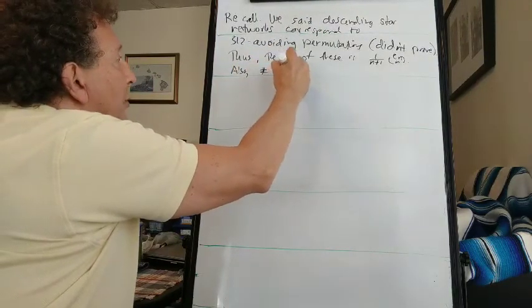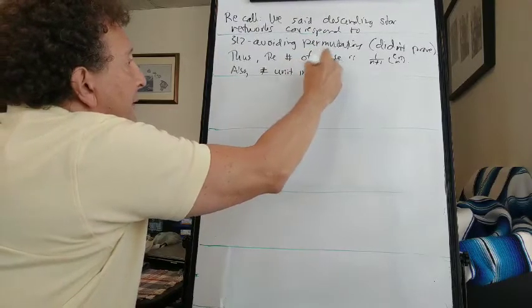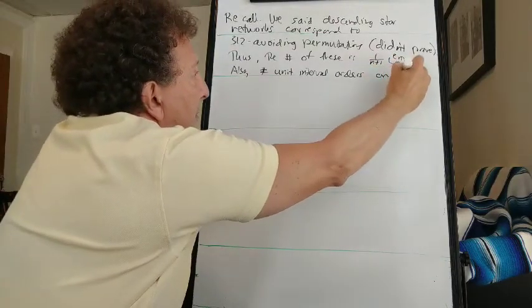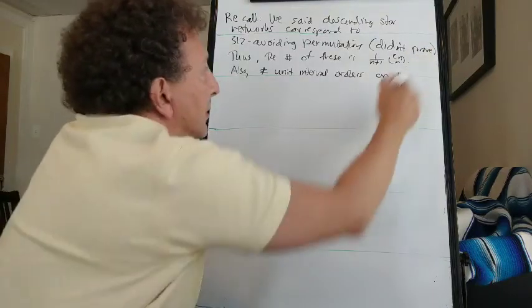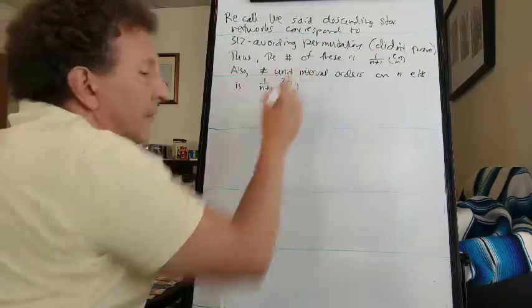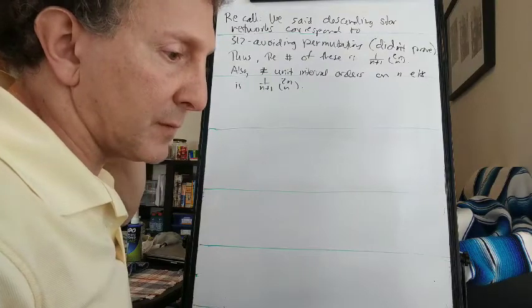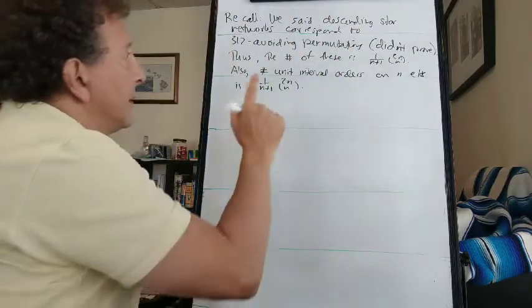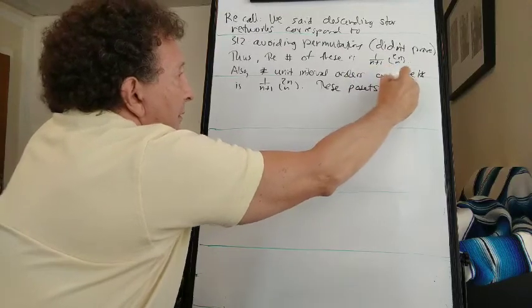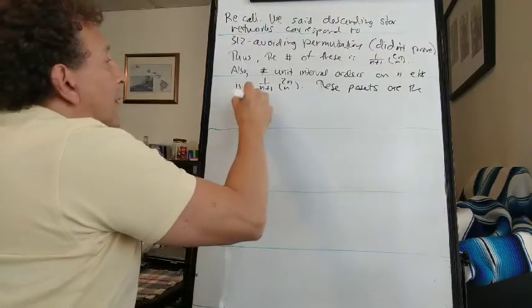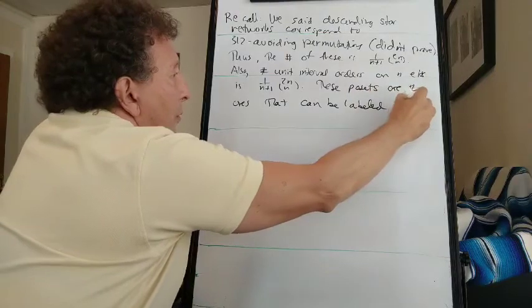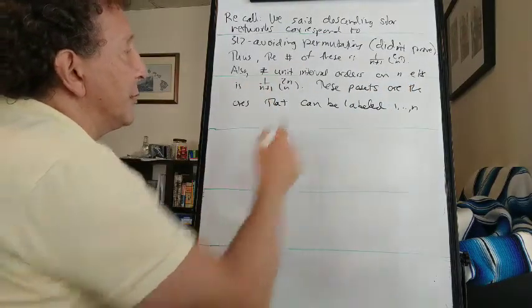Also, the number of unit interval orders, postsets that avoid 3 plus 1 and 2 plus 2 on n elements, is also a Catalan number. Now these postsets, the unit interval orders, are the ones that can be labeled 1 through n.